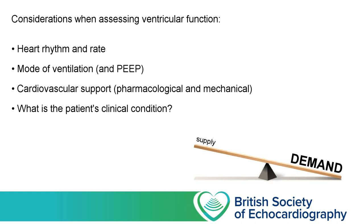Now that we have an approach for assessing left ventricular size, let's move on to left ventricular systolic function. Before we do, there are a few contextual factors to consider each time we're looking at the heart, which allow us to put our assessment of ventricular function into context. These apply equally to both the left and right heart. Firstly, what's the heart rate and rhythm? We can take this from the bedside monitor or the ECG on the ultrasound machine. Is the patient in an irregular rhythm such as AF? If so, they'll have variable filling times between each systole.